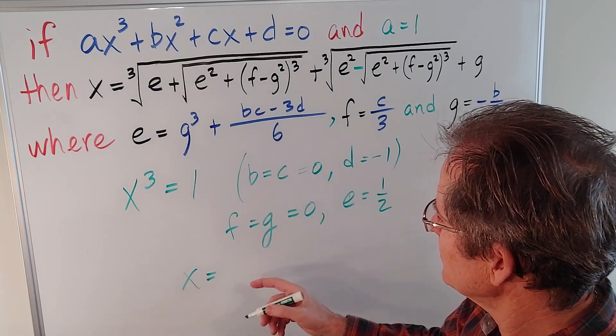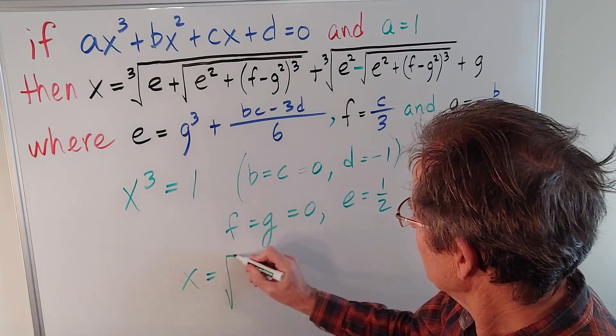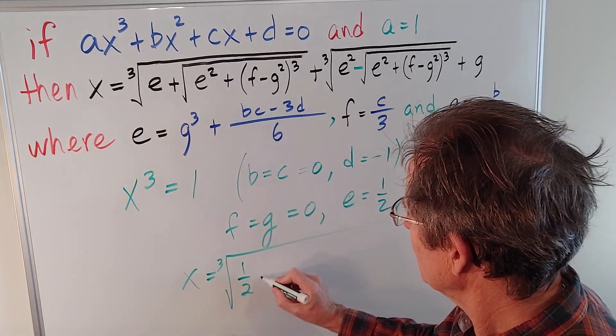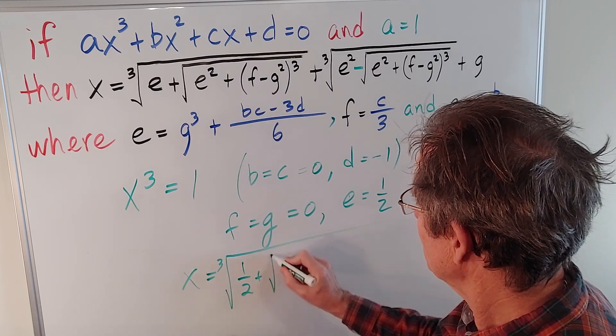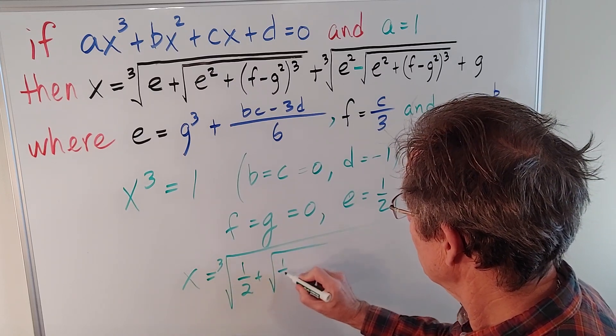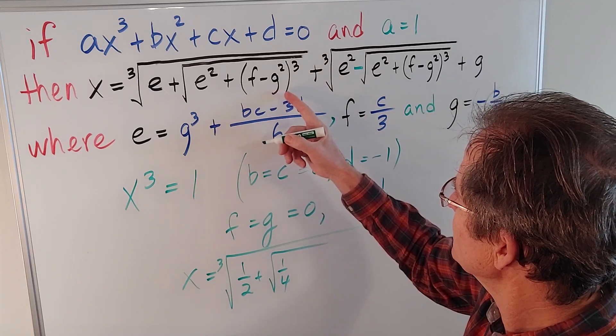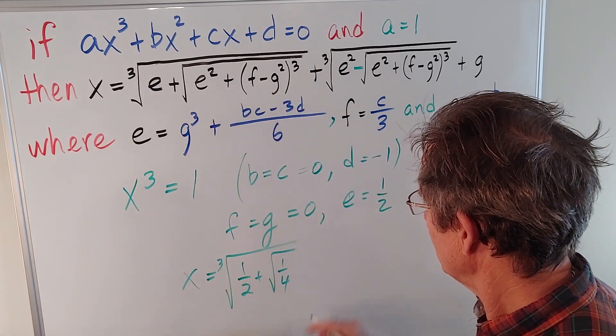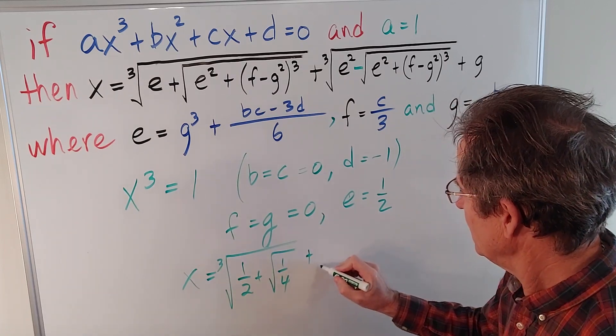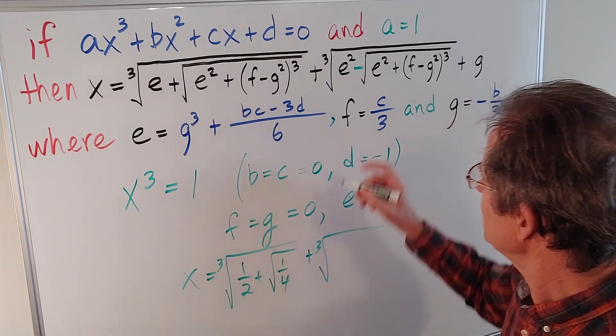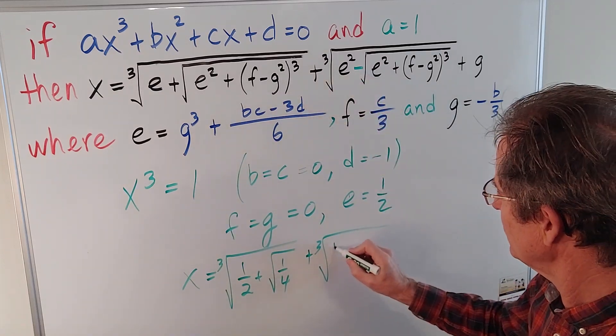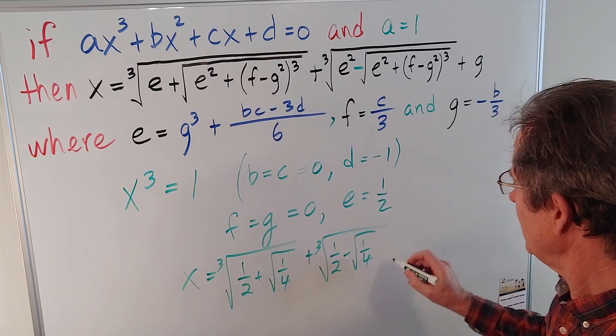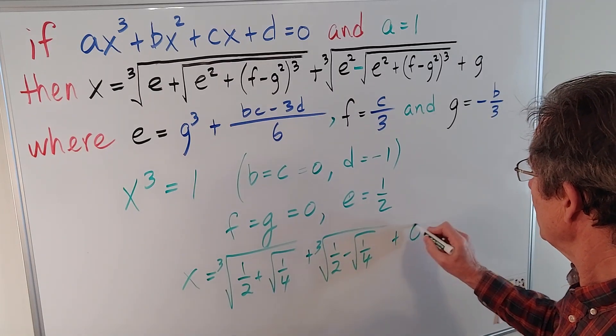So what's x? Well, now we have to be a little more careful with our calculation. It's the cube root of 1 half plus the square root of a quarter, plus a bunch of 0s, plus the same term except for the minus sign. So 1 half minus the square root of a quarter, plus 0.